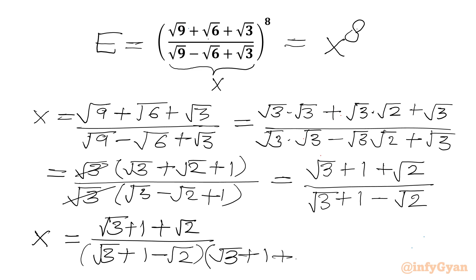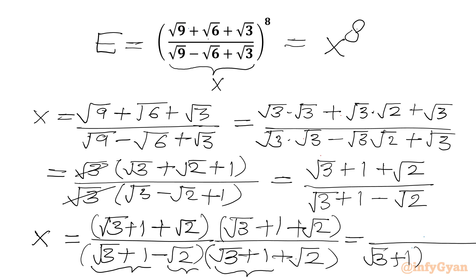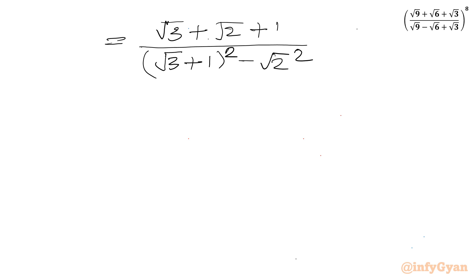We will multiply numerator and denominator by (√3 + 1 + √2). The denominator becomes a plus b times a minus b form, where a = (√3 + 1) and b = √2. So the denominator becomes (√3 + 1)² - (√2)², and the numerator becomes (√3 + √2 + 1)² while the denominator simplifies to (√3 + √2)².